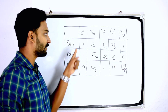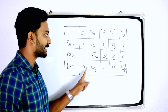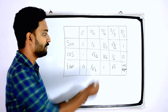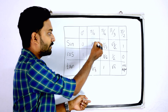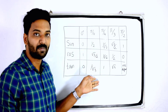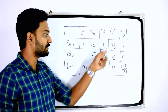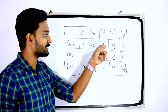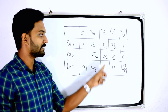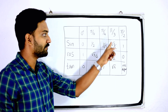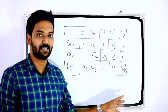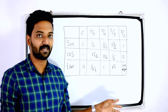Tan theta means sin divided by cos. So tan 0° = 0/1 = 0. Tan 30°: (1/2) divided by (√3/2) — the 2 and 2 cancel — giving 1/√3. So tan 30° = 1/√3.